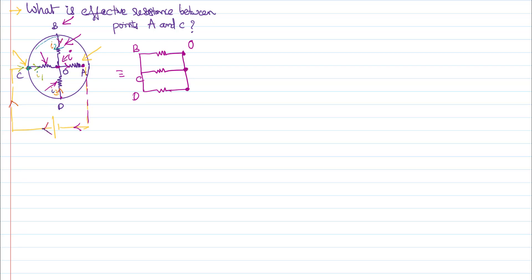From O there is an identical resistance, and from there is point A. So we have resistors: R, R, R, R, and R. Looking at the battery you have connected in the circuit, these two circuits are equivalent. You can clearly see the three resistors R, R, R are in parallel.